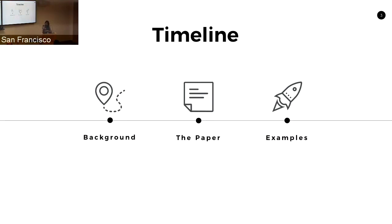It's part of a set of data structures called sketching data structures. I'll start by covering the background — what the cardinality problem is and what the traditional means of solving it are. Then I'll dig into the paper, building intuition for the solution before digging into the algorithm itself. Finally, we'll discuss some work that came after this, where I've seen this algorithm pop up in production systems.